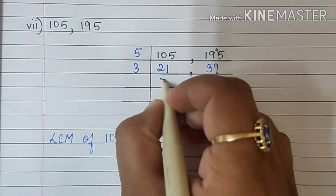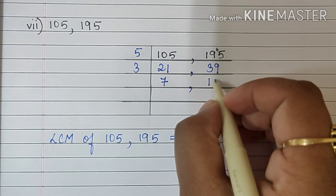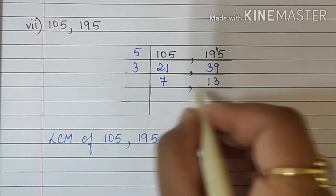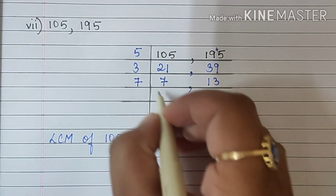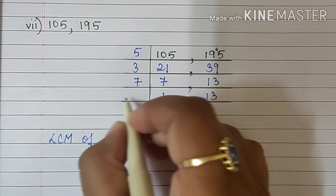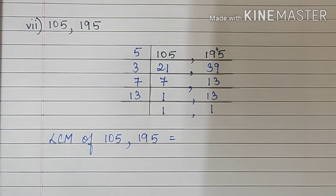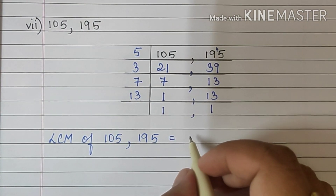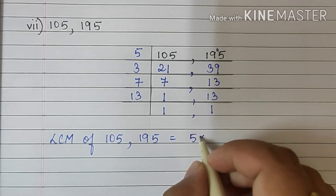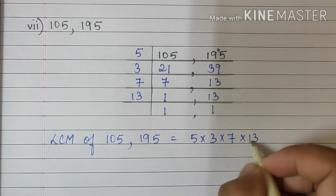So we will write 3. 3 7s are 21, 3 1s are 3, 3 3s are 9. Now both are prime numbers. So first we will take 7. 7 1s are 7 and 13 will come down as it is. 13 ones are 13. So the LCM of these numbers is 5 multiplied by 3 multiplied by 7 multiplied by 13.